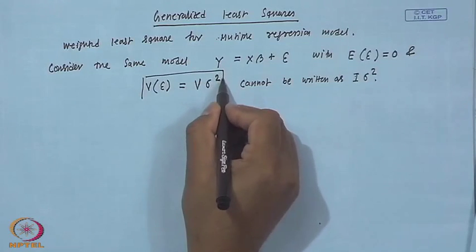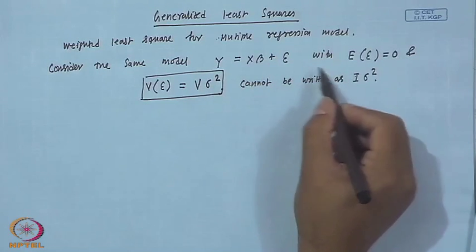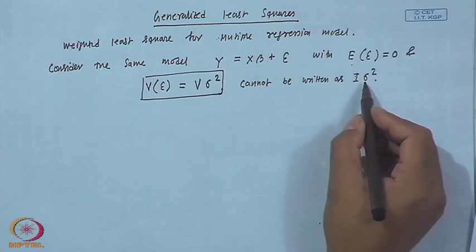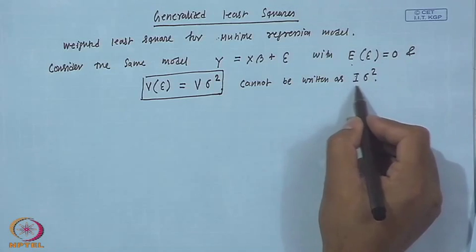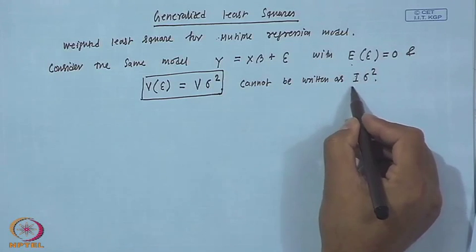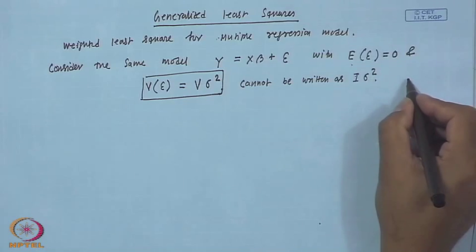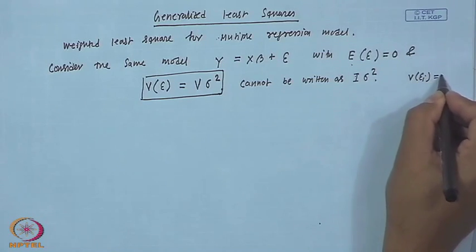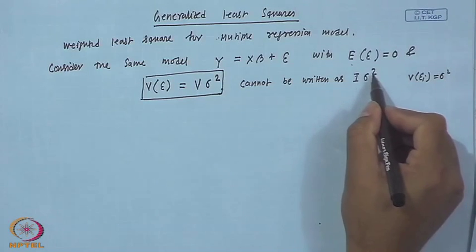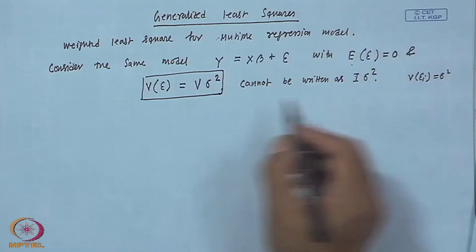This is important because whatever we did before for the multiple linear regression model, we assumed that E[ε] = 0 and Var(ε) = σ²I, meaning the constant variance assumption is true — all variances of ε_i equal σ² for all i and they are uncorrelated. But here this is not true.